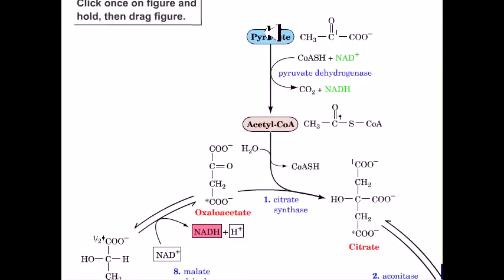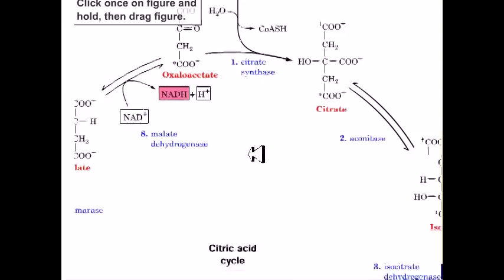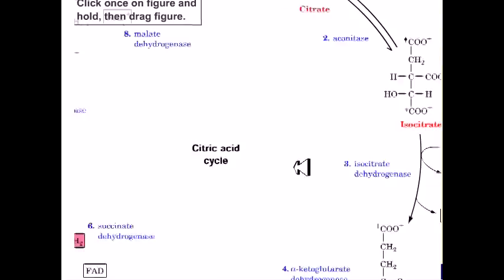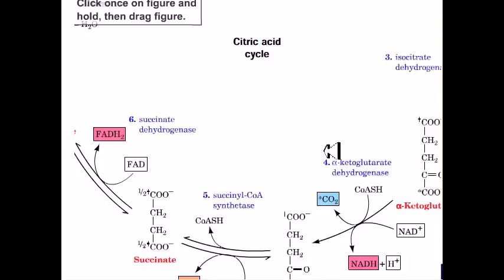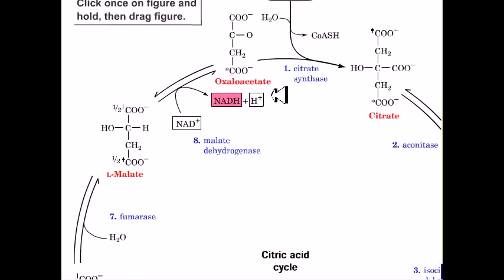From pyruvate, this is a tedious job requiring plenty of different enzymes and energy sources. Right after the production of acetyl-CoA, we can run this citric acid cycle, which is the core and heart of all metabolic steps. As you can see here, eight different enzymes are involved in this citric acid cycle.